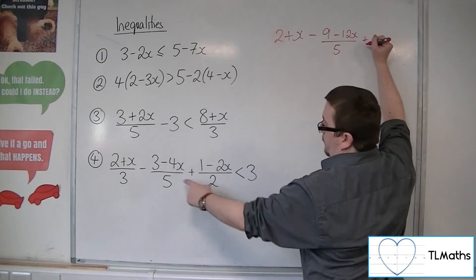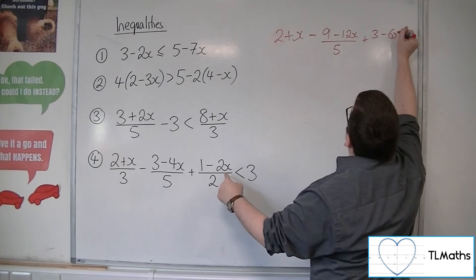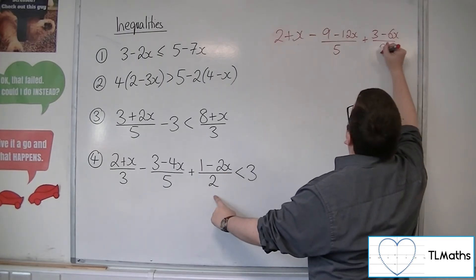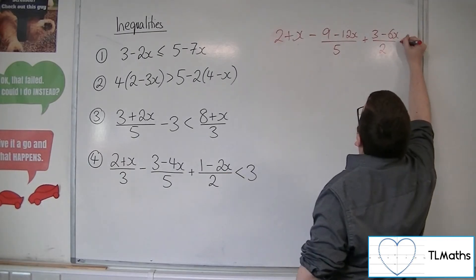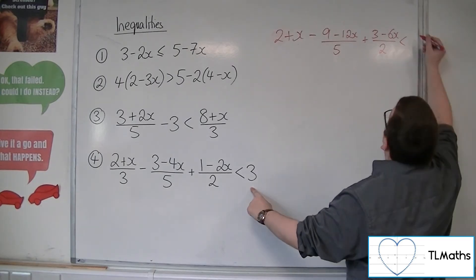I'm also multiplying this fraction by 3. So plus 3 lots of 1, so 3. 3 lots of minus 2x is minus 6x. And the 2 doesn't get affected. The 3 on the right-hand side does. 3 lots of 3 is 9.